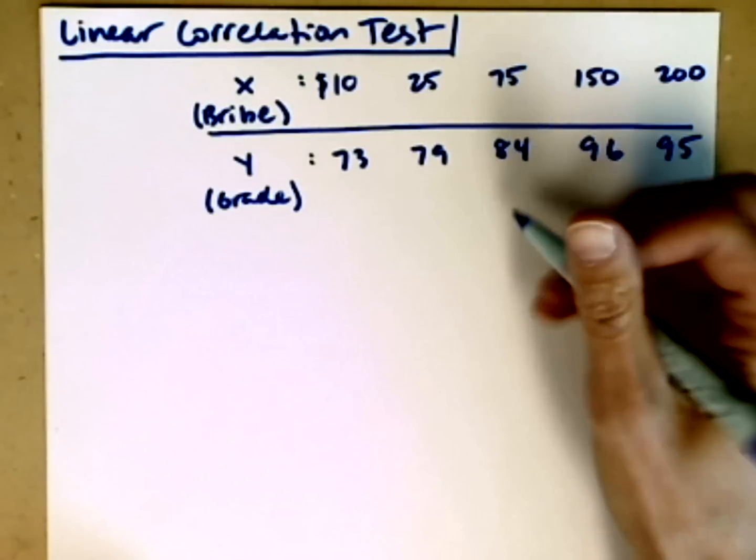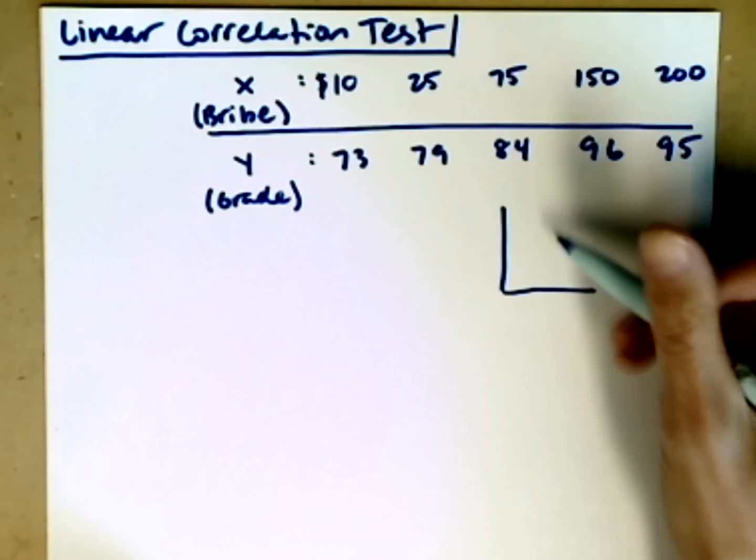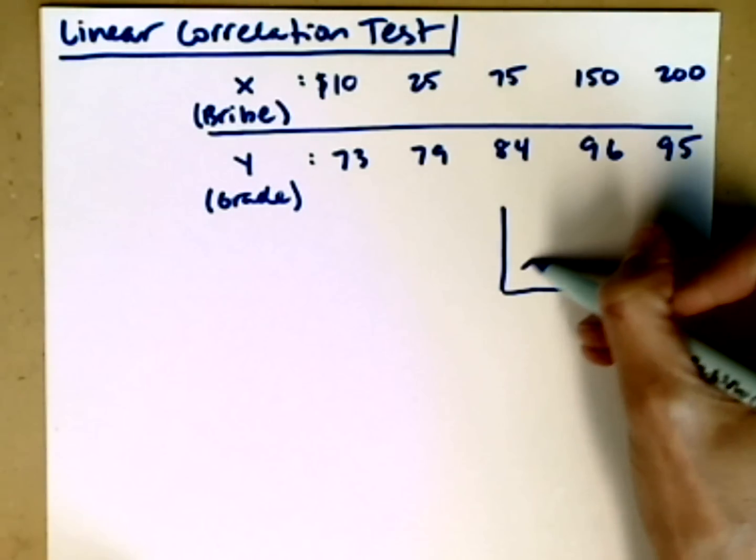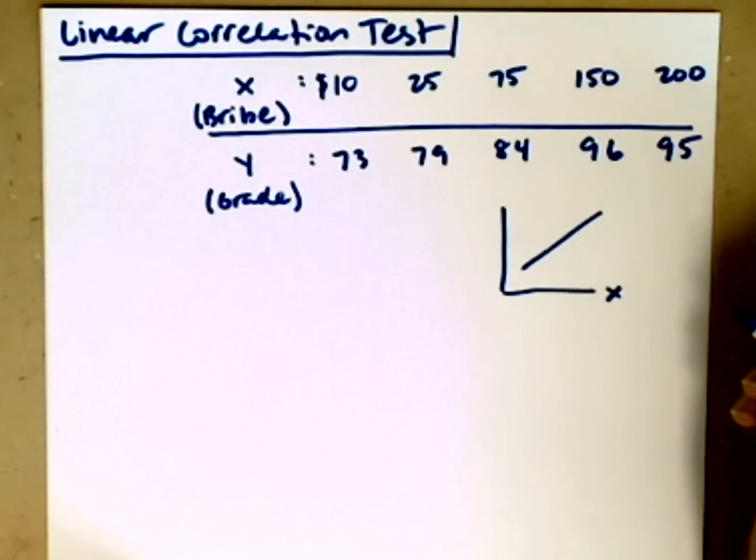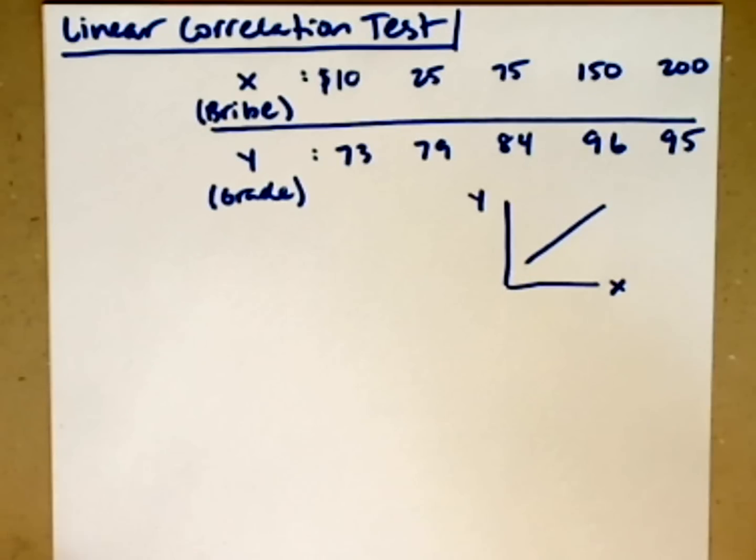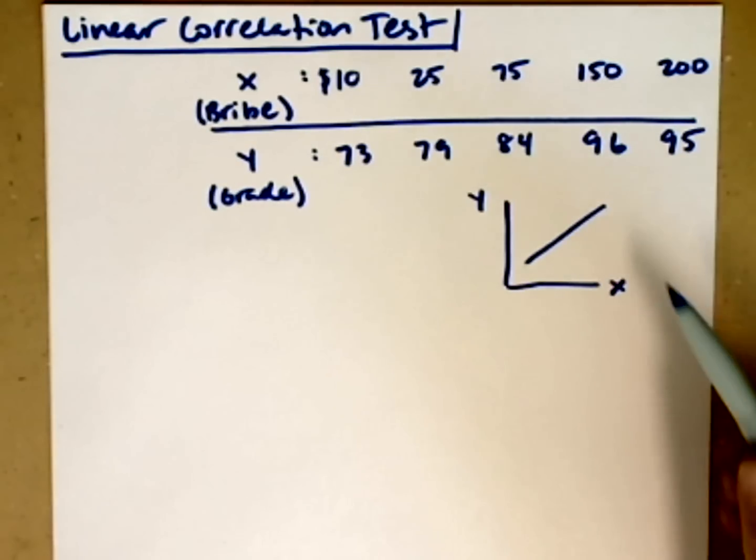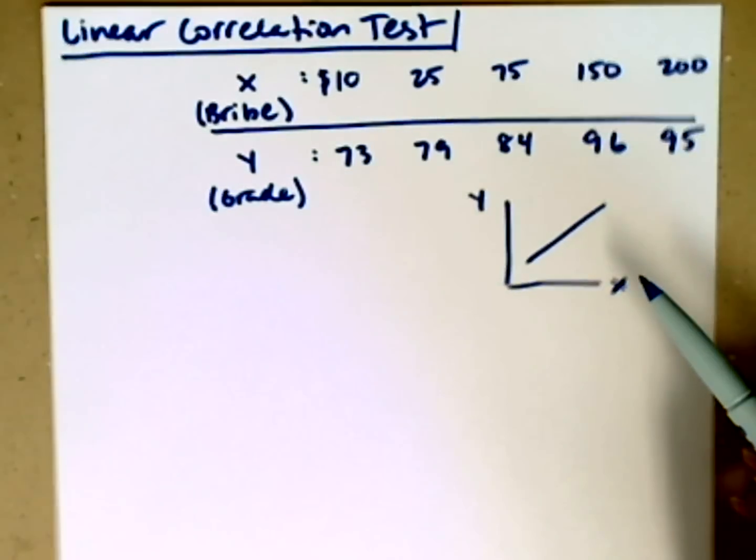So the idea, if there's a positive linear correlation, is that we would be able to draw a line through these points that would have a positive slope. We would have the bribe amount here as the x variable, and the grade there as the y variable. For this particular one, we happen to be looking for a positive linear correlation.